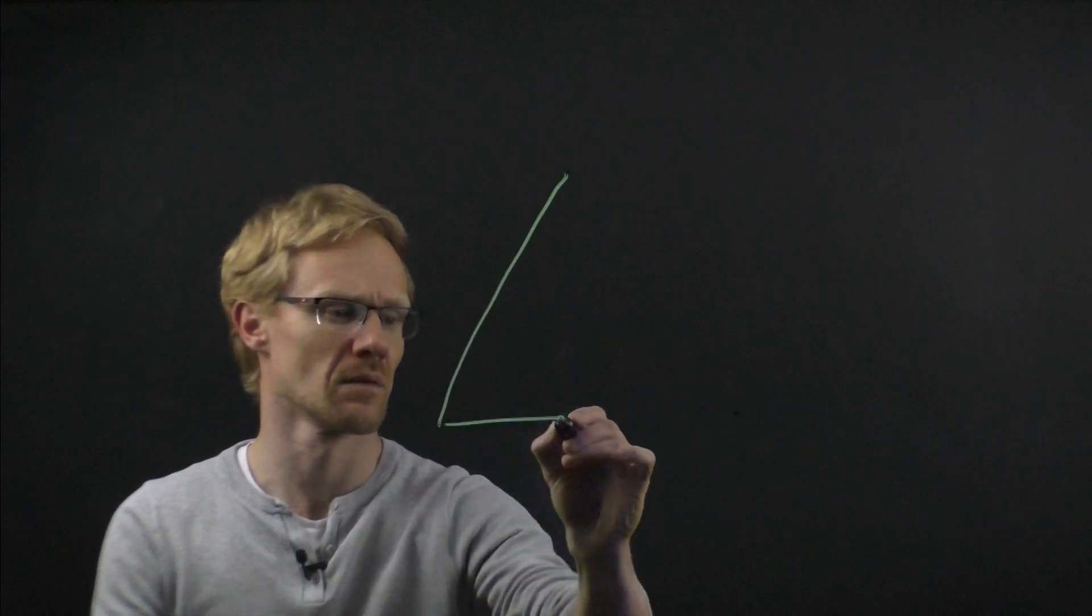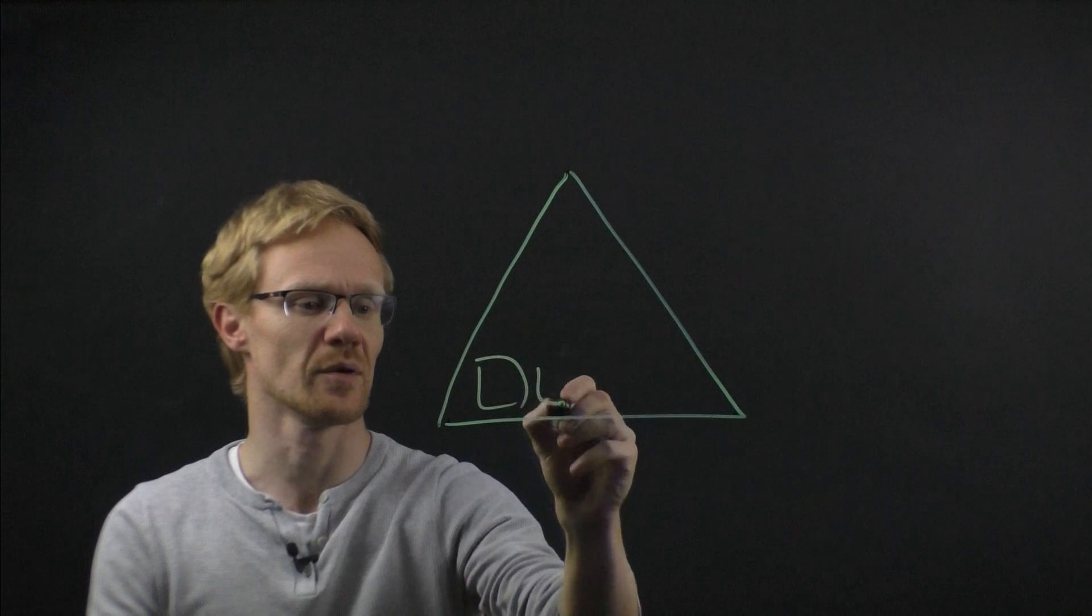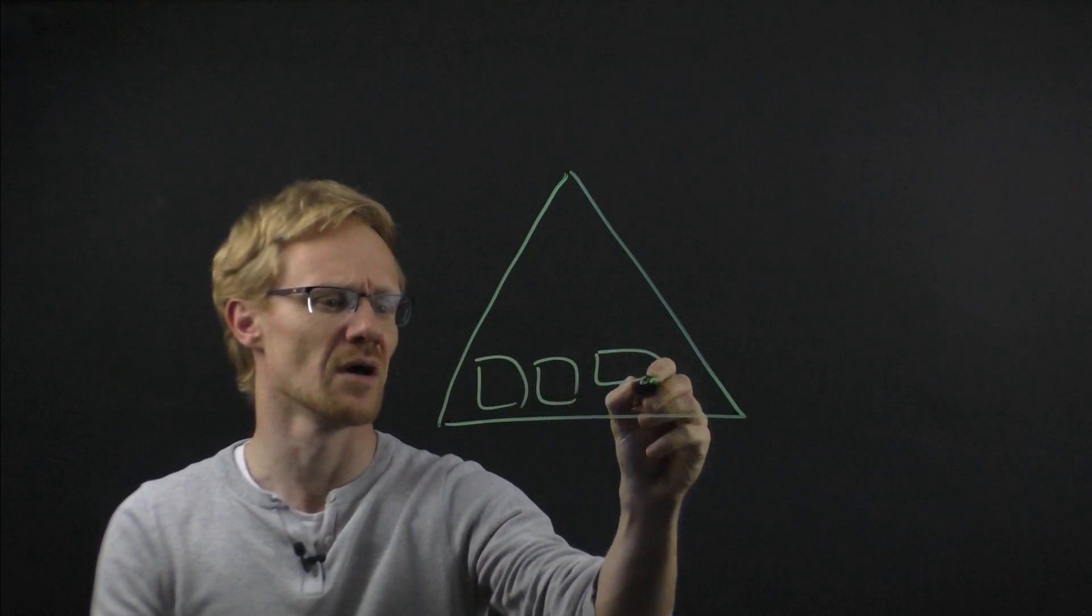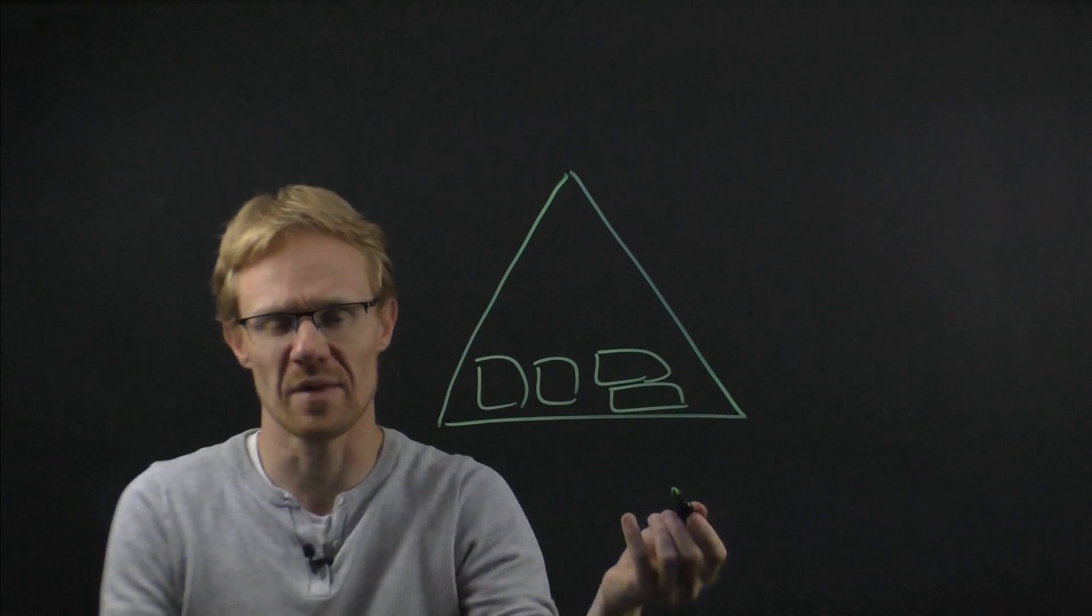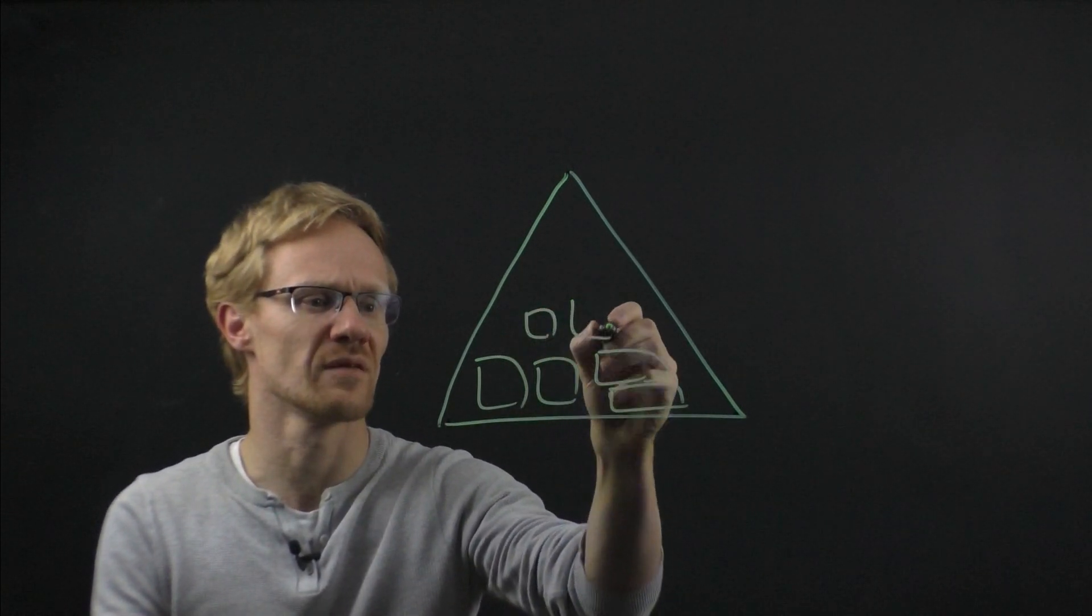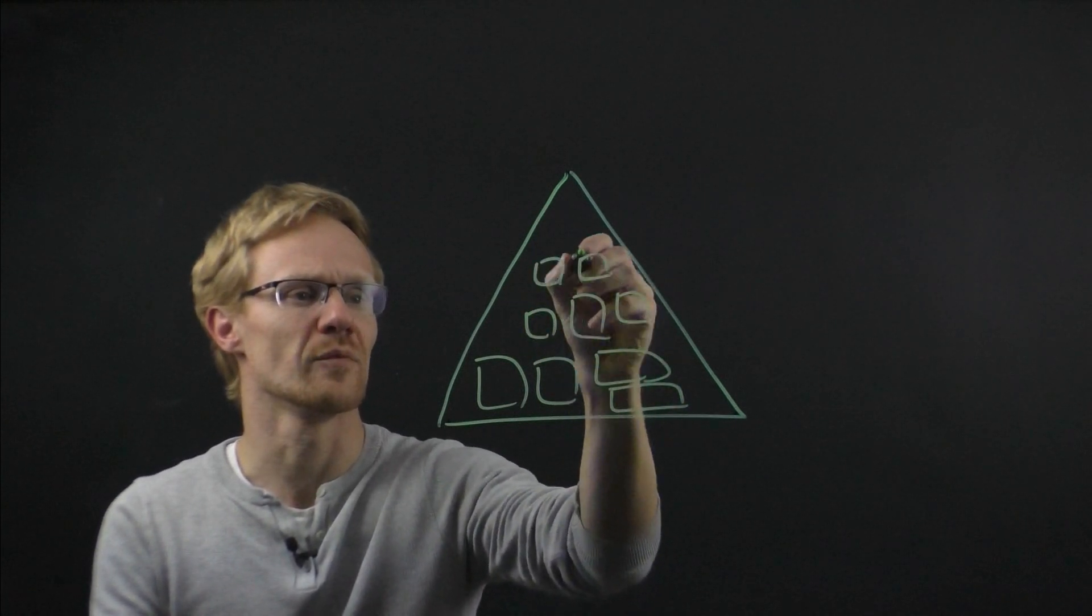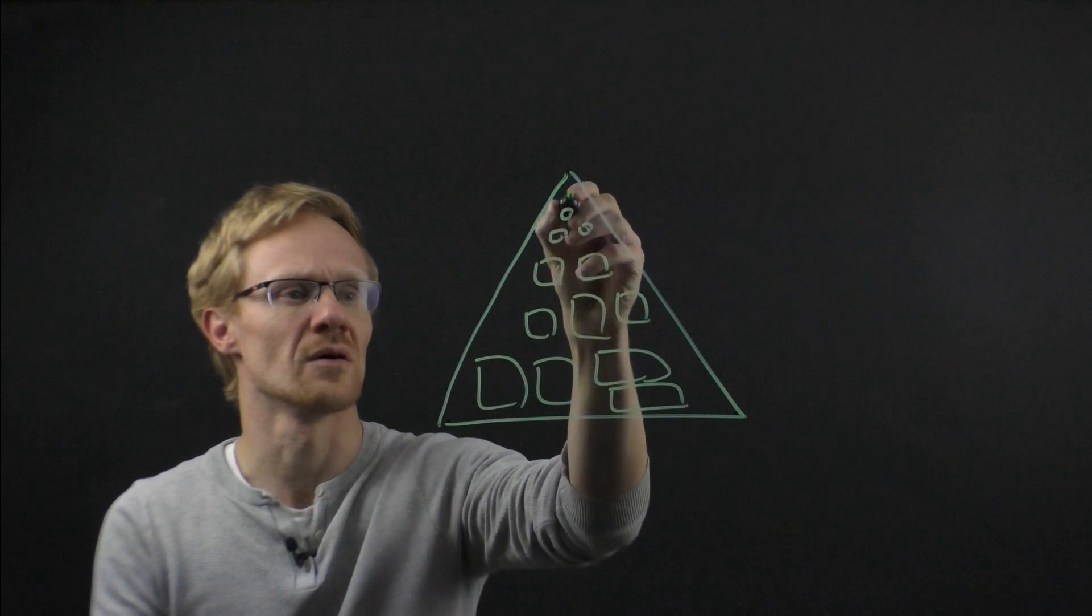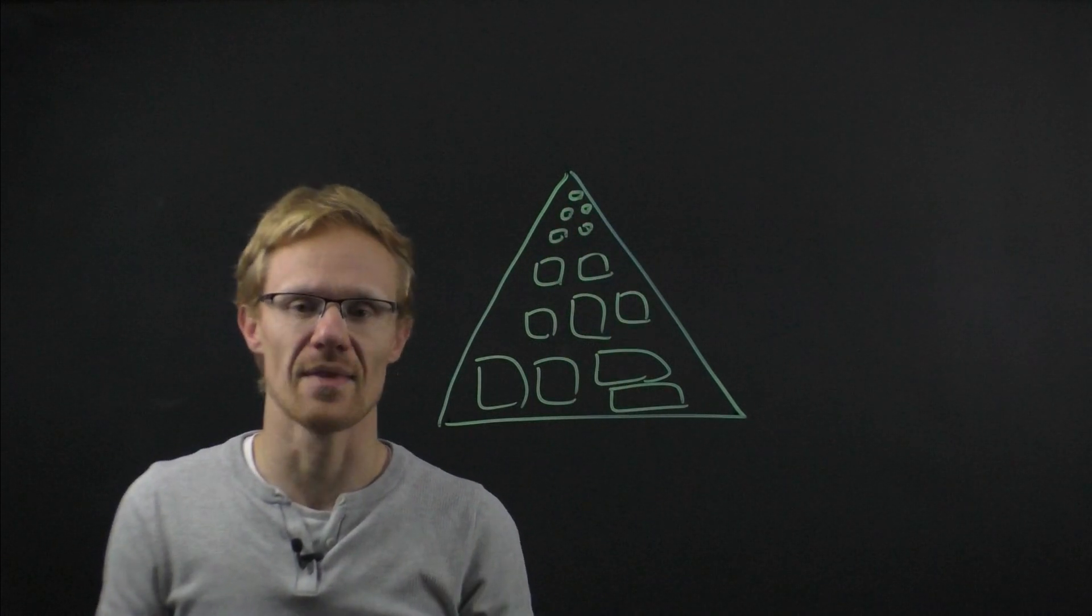So one of the common ways to represent a backlog is as a pyramid like this where you have the large epics at the bottom. These are large, undefined, very big and unclear and vague. That's fine because they are at the bottom and then as you progress up things get more refined and smaller and at the very top you have very small items which are refined, small stories that you can work on in a couple of days and they are ready to go.